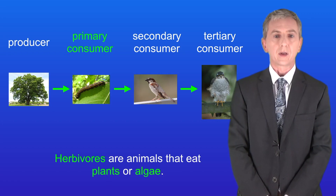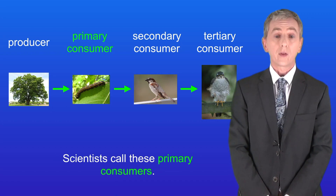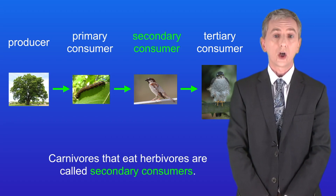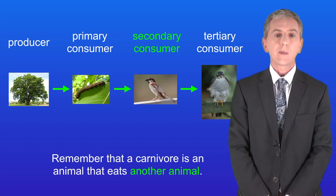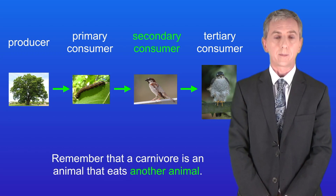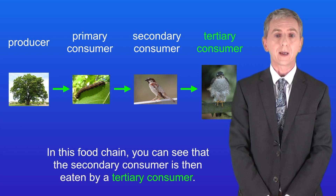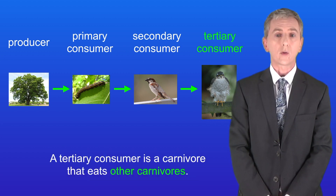Herbivores are animals that eat plants or algae — scientists call these primary consumers. Carnivores that eat herbivores are called secondary consumers, and remember that a carnivore is an animal that eats another animal. In this food chain you can see that the secondary consumer is then eaten by a tertiary consumer — a carnivore that eats other carnivores.